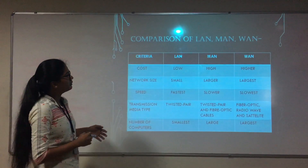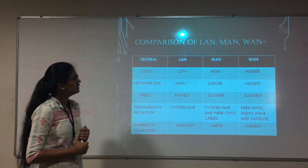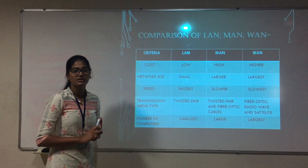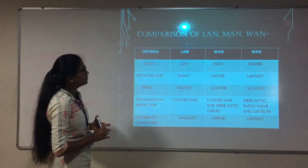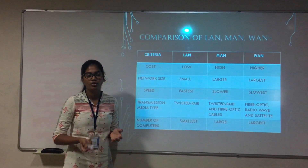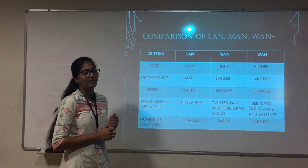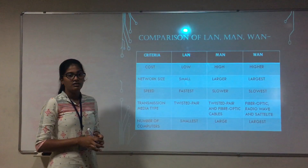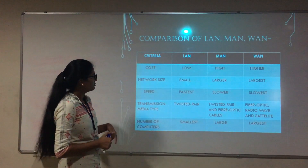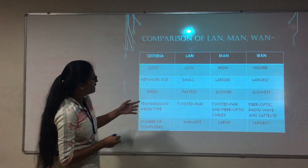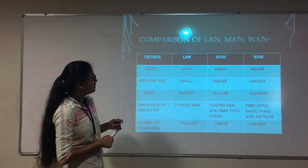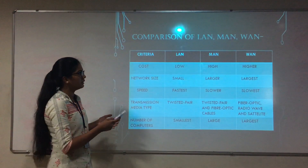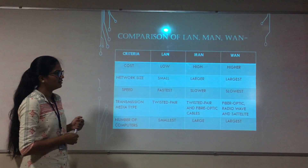This is the comparison table of LAN, MAN and WAN. LAN is not that expensive because we use fewer cables. In case of MAN, we require more cables, so the cost is higher. In WAN, it is highly expensive because we use satellites and radio waves. The network size is very small in case of LAN, larger in MAN, and very large in WAN compared to both LAN and MAN.